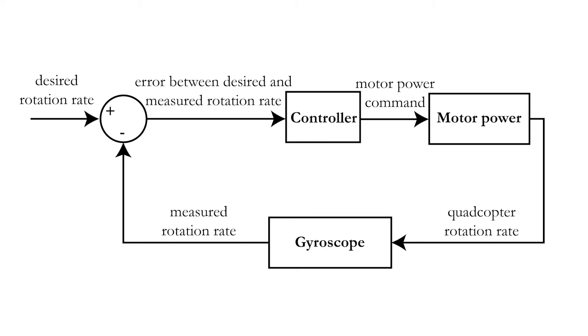You use the gyroscope sensor to measure the actual rotation rate of the quadcopter and compare it to the desired rotation rate which you have sent from the radio transmitter. The error between both is transformed by the controller to a motor power command that is sent to each of the four motors. The resulting change in motor power changes the rotation rate of the quadcopter to a value that should be closer to the desired rotation rate than before. The actual rotation rate is measured once again and the process restarts. Now the big question is how the controller transforms the error between the desired and measured rotation to the motor input.